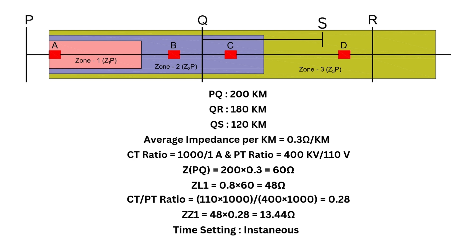This is because transmission lines are not perfectly balanced and there may be slight errors in the CTs and PTs. Setting zone 1 to exactly 100% could result in incorrect tripping for faults just beyond the protected line. By limiting it to 80%, we avoid such unnecessary trips.